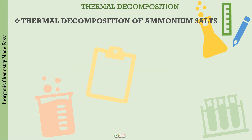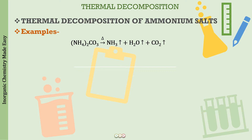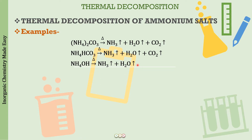Now let us learn what compounds form when ammonium salts are heated. We first take examples: ammonium carbonate, bicarbonate, and hydroxide. When ammonium carbonate is heated, ammonia gas, water vapor, and carbon dioxide are released — all three escape as gases and no residue remains. The solid is heated and nothing remains; all gases escape. Similarly, when bicarbonate is heated, the same three products form. And if it is hydroxide, then only ammonia and water vapors are obtained, which again escape into the air.